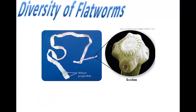Cestoda parasites are adapted to life in the intestines of their hosts. Looking at the anterior end, we can see the scolex — a knob-like structure with hooks and suckers that attach to the intestinal lining of a host such as a cow or human. Behind the scolex, each individual section is called a proglottis, each containing muscles, nerves, flame cells, and male and female reproductive organs. Proglottids form continuously as new ones form near the scolex; older ones are moved farther back and mature. After eggs in the mature proglottids are fertilized, the last segment with the developing embryos breaks off and passes out of the intestines.